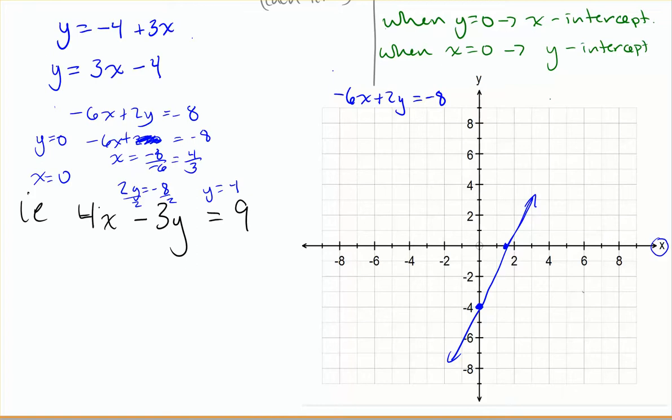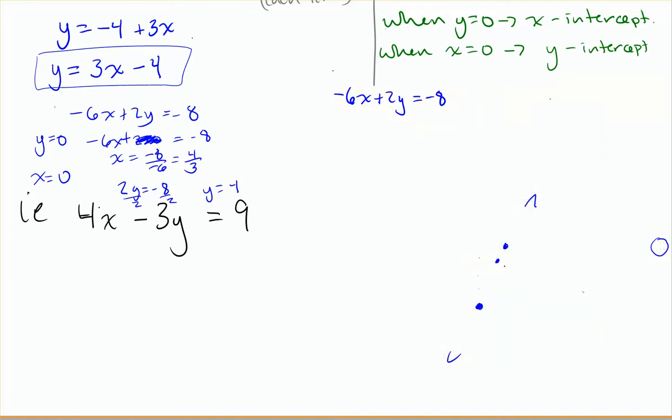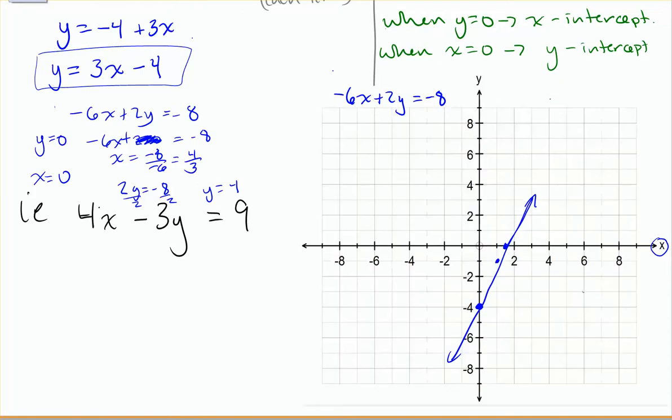And similarly, you could have used your y equals mx plus c method with that equation that we'd rearranged for. Starting at negative 4, my gradient is 3 over 1. So I'd go up 3, 1, 2, 3, over 1. And you can see that I can't draw a very straight line, but if I could, it would have gone through that point there. But that's what you get for watching me draw on a tablet instead of a piece of paper with a ruler.